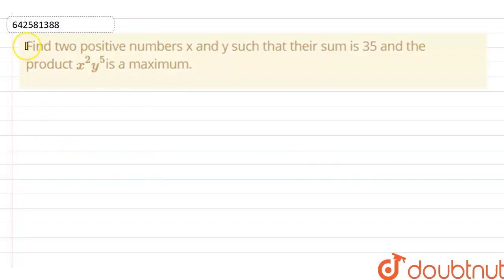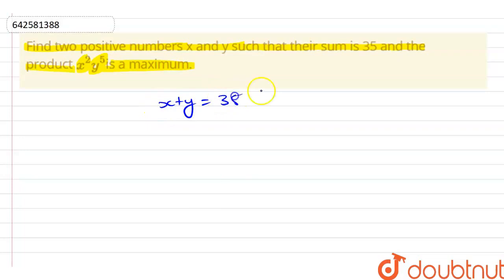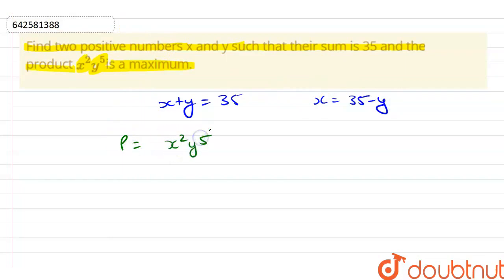The question is: find the two positive numbers x and y such that their sum is 35 and their product x squared into y raised to power 5 is a maximum. Let's say the sum of two numbers is 35 as per our given question. So from here, the value of x is 35 minus y. Now let's say the product is P and that is equal to x squared into y raised to power 5.